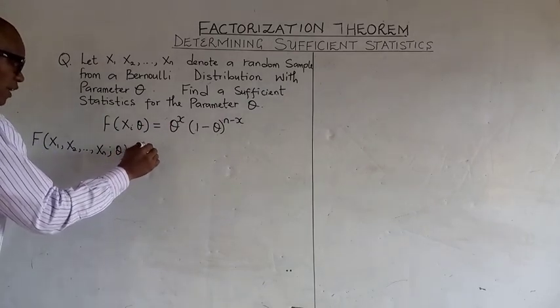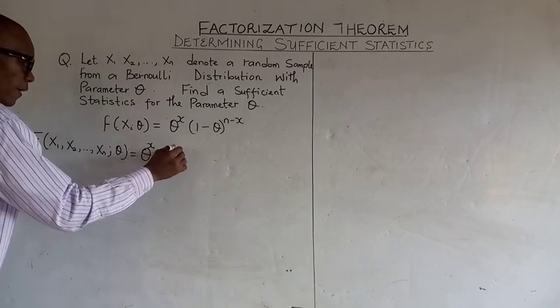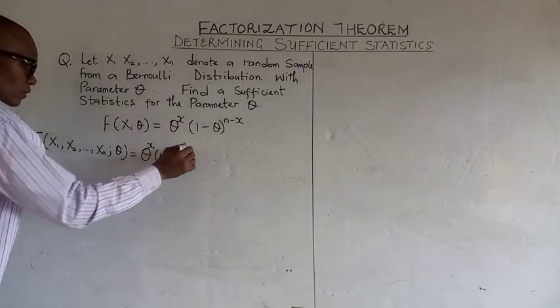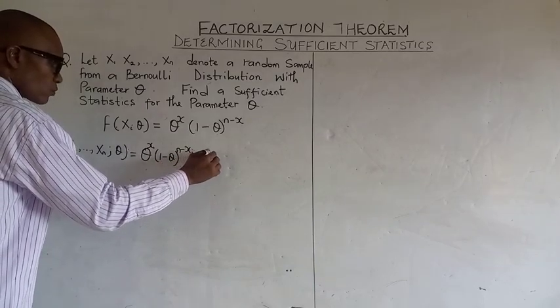Factoring this out we have theta^x1 (1 minus theta)^(n minus x1) multiplied by theta^x2.